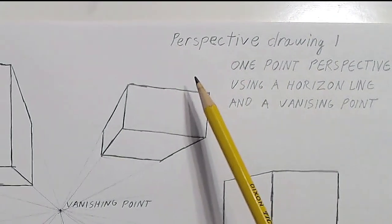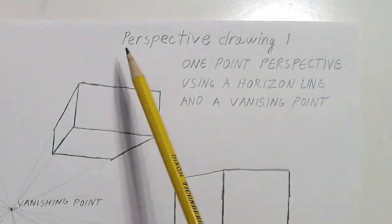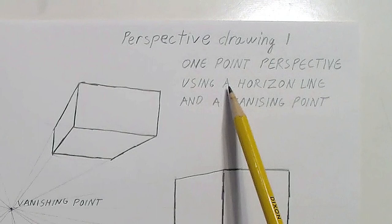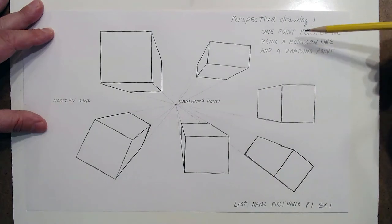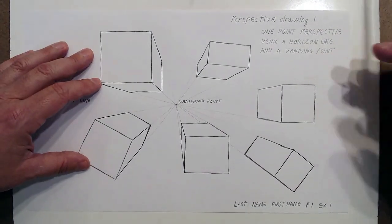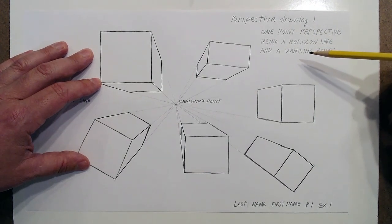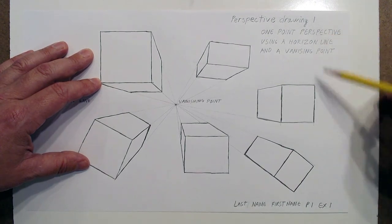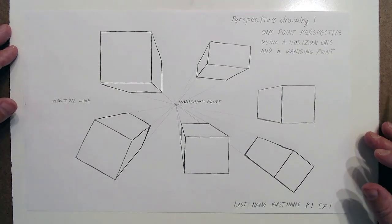So just like the exercises that we did when we did the drawing intensive, I want you to label these very precisely. This is perspective drawing one, one point perspective using a horizon line and a vanishing point, because that's the nature of the lesson. Remember, I do this for a reason, because when you verbalize, when you get vocabulary, when you know the name of things, then you understand them much more deeply. Also give me your last name, your first name, the period number, and the exercise number, which is usually the same as the drawing number. That just makes it a lot easier for me.